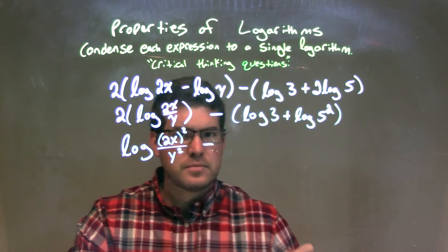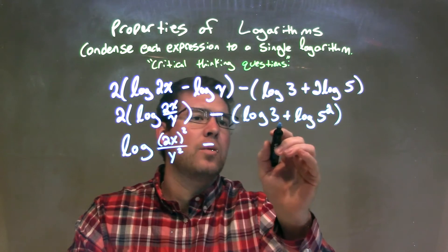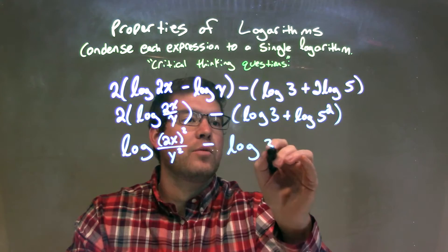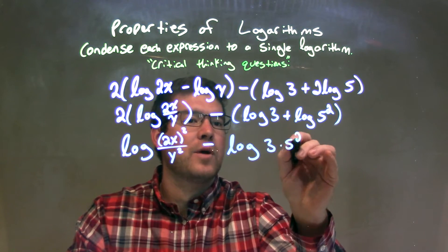And we're subtracting that minus, okay, minus here, well, now we can condense this to be 1 log of minus log of 3 times 5 squared.